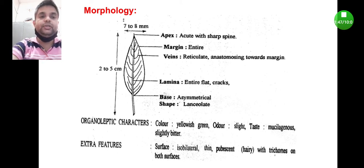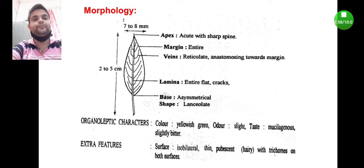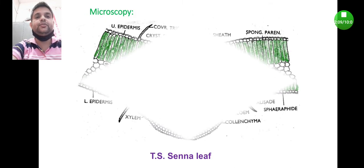Both the upper layer and lower layer are very smooth due to the presence of trichomes. This is in brief regarding various morphological characters of Senna leaf.